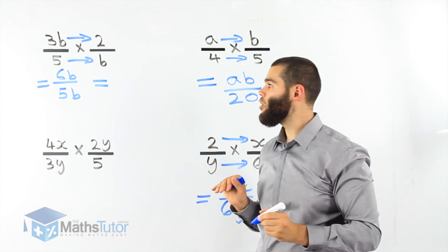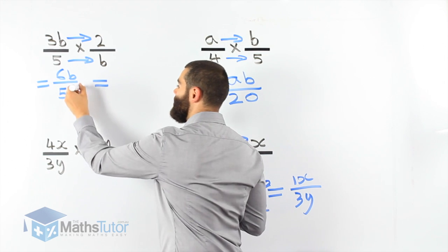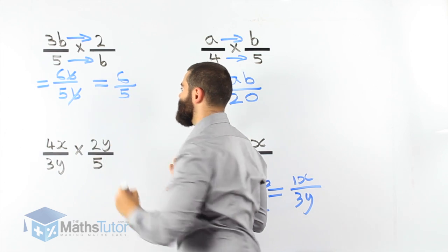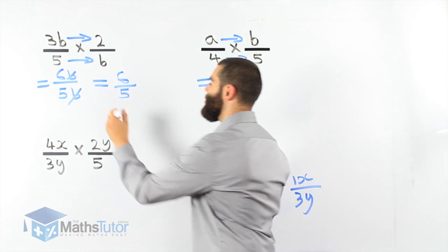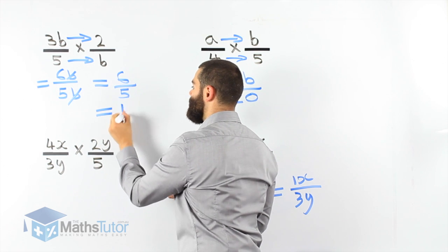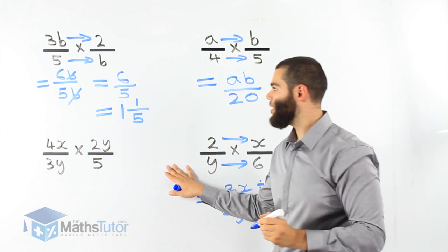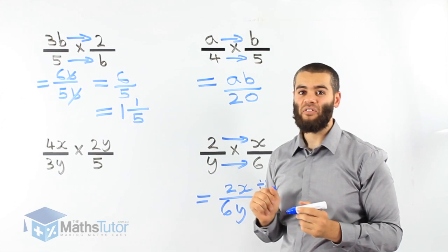Now, 6 over 5, or 6b over 5b, we know the b's cancel out. 6 over 5 is our answer in improper fraction. Or we can write it as a mixed numeral. How many fives go into 6? One whole and one remaining. And the 5 is the denominator. 1 and 1 fifth. This is our answer for that question there.